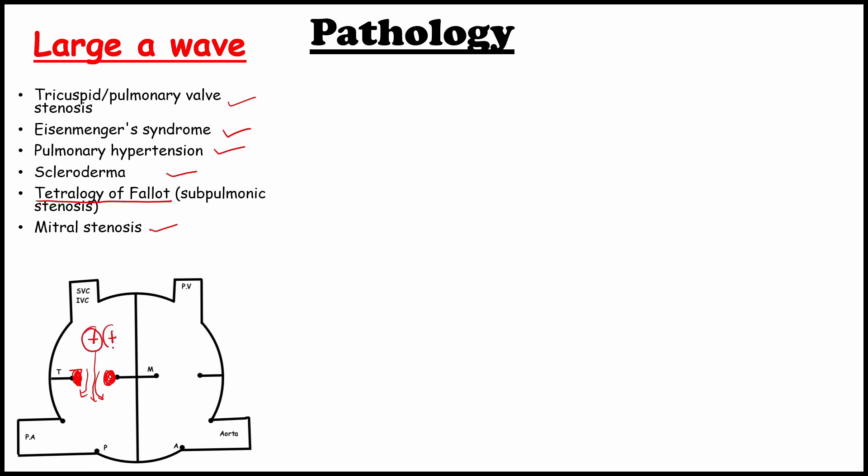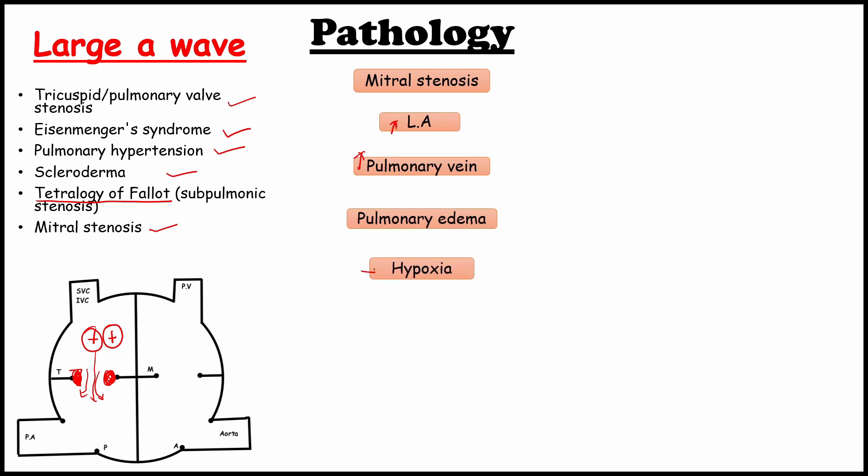In mitral stenosis, the pressure in the left atrium increases. So increase in the pressure of the pulmonary vein which causes the pulmonary edema. This will lead to hypoxia. As a compensatory reaction, peripheral resistance will increase. This will lead to pulmonary hypertension which causes increase in atrial pressure. One thing if you have noticed in this case, prolonged mitral stenosis will cause compensatory hypertrophy in the right ventricle.